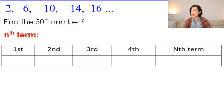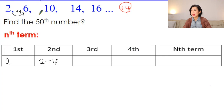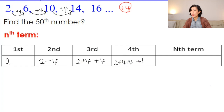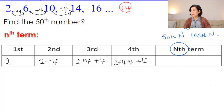Let's look at the number sequence that increases by 4. I'm going to use 4 to write down the pattern. The first number is 2. Increased by 4, so 2 plus 4 gives 6. The next adds 4 again: 2 plus 4 plus 4. The 4th number: 2 plus 4 plus 4 plus 4. It looks like we keep adding 4 from the first number. The nth term could be 50th, 100th, or 25th — it can be any number.